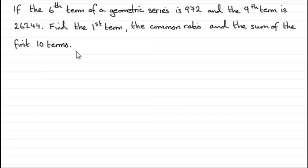So how are we going to do this? Well, first of all we're given a couple of terms here in the series. The sixth term, now remember that for a geometric series or sequence the nth term is given by a, a being the first term, r the common ratio, to the power n minus 1.